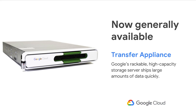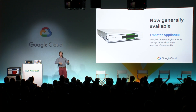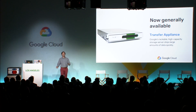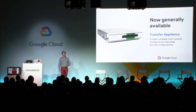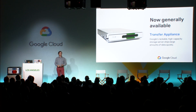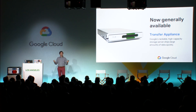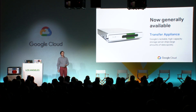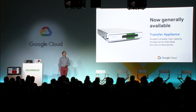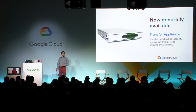It's as easy as requesting Transfer Appliance in your cloud console. We ship one to you, you receive and rack it up, just jam it full of data, and ship it back to us. Your data will be available in Google Cloud Storage in a matter of days — not months, like it would be if you tried to transfer it over a network at that scale. At that point, it's ready to be exposed to all of the other amazing services from Google Cloud and all the other things you might be running there.